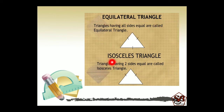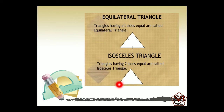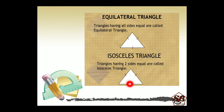The second one is isosceles triangle. Triangles having two sides equal are called isosceles triangles. In this picture, you can see there is one single line on this side and on this side as well, which indicates that these two sides are equal and the other third side is of different length. Such types of triangles where two sides are equal are called isosceles triangles.